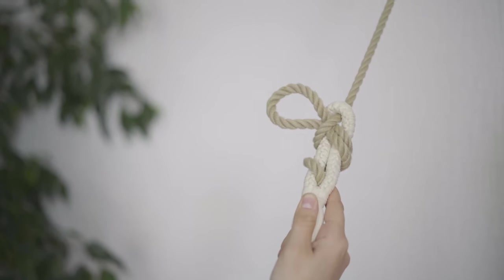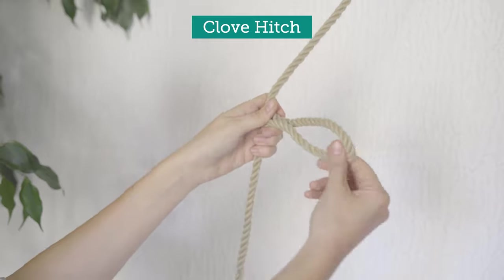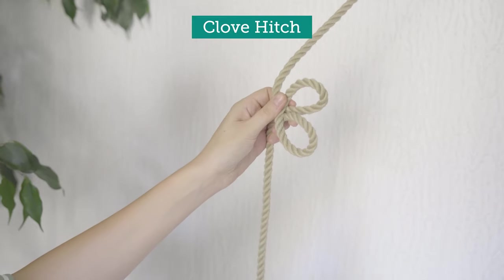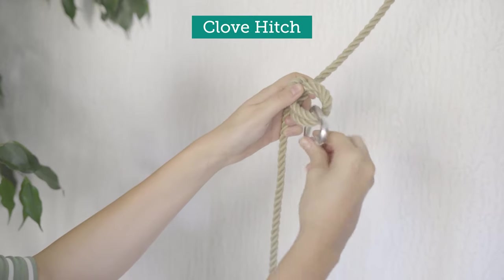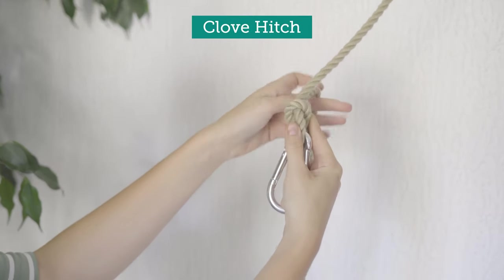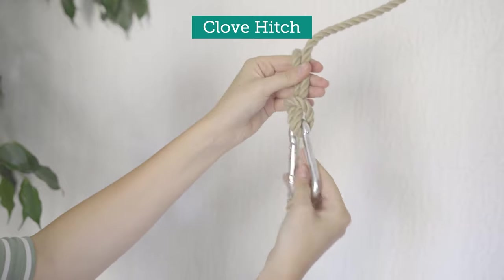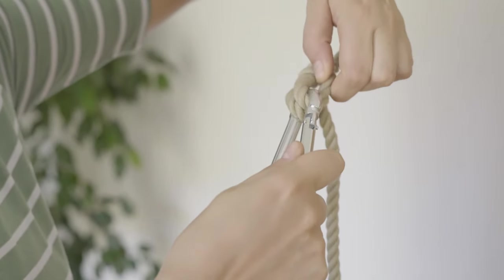Alternatively, you can tie a carabiner between your rope and hammock. This is especially useful if the hammock is going to be hung in a fixed place. Here we use the clove hitch to attach the carabiner to the rope. Likewise, this knot can be adjusted easily and tightens under load.